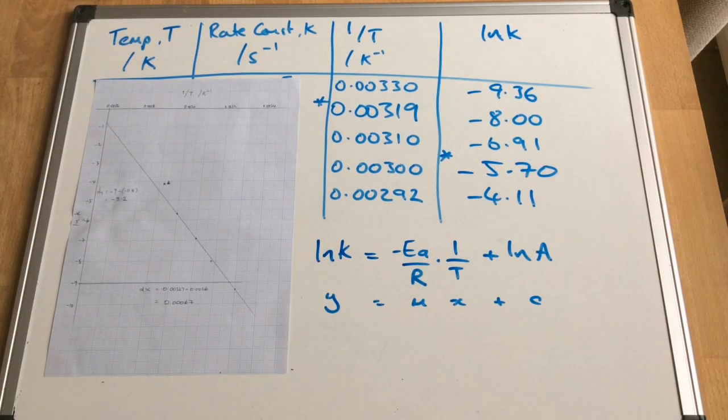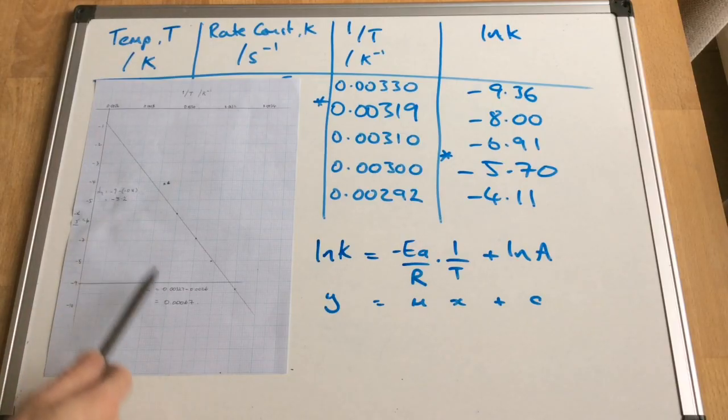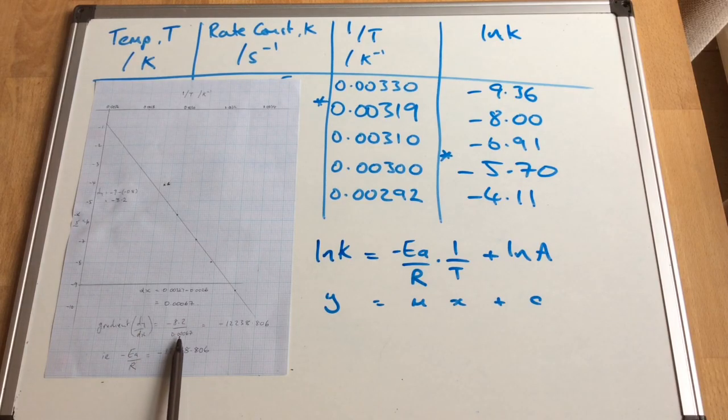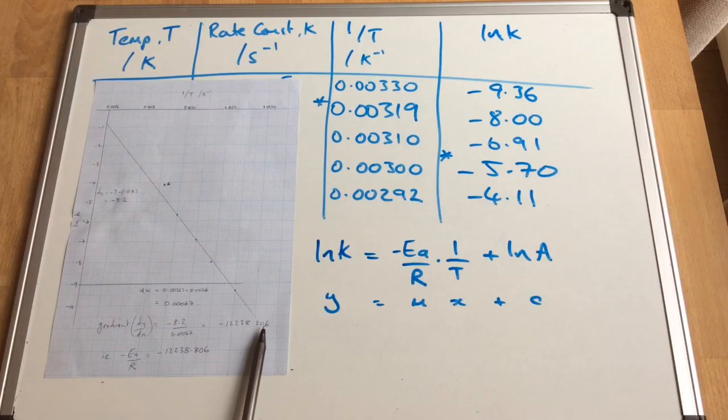Now, yours may well be slightly different to that. There's always a little bit of tolerance on these kind of questions. Not a massive amount when you've got straight line graphs, a bit more on curves, but you should be getting round about the same as me there. So you can see there's my gradient calculation. My dy by dx is coming out at negative 8.2 divided by 0.0067.